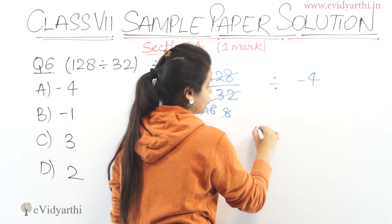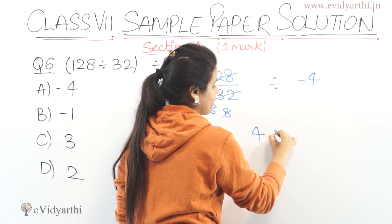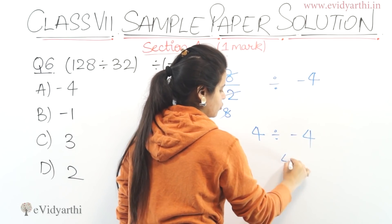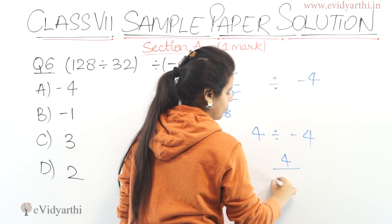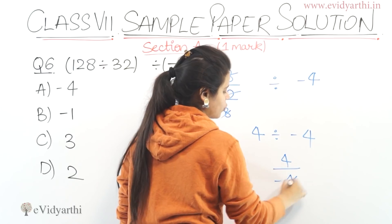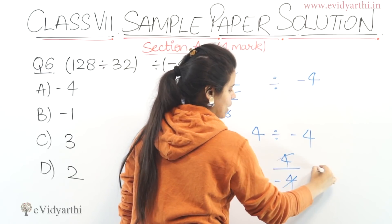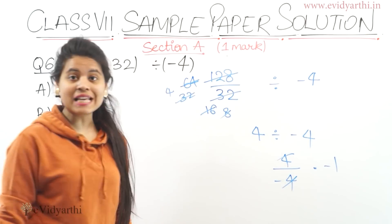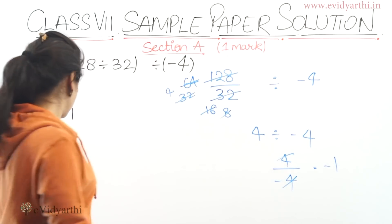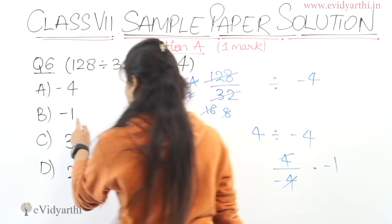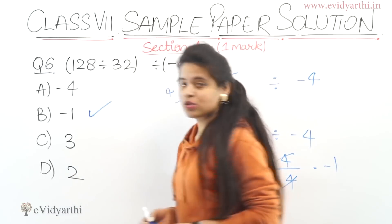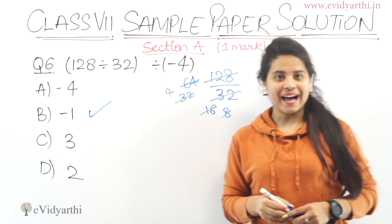So we will have 4 divided by minus 4. 4 upon minus 4 cancel out ho jaate hain. We will have minus 1. So our answer is minus 1. This will be the answer.